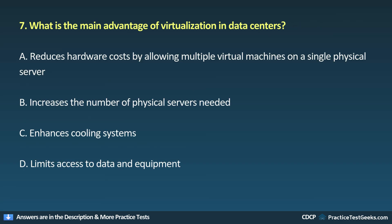Question 7. What is the main advantage of virtualization in data centers? A. Reduces hardware costs by allowing multiple virtual machines on a single physical server. B. Increases the number of physical servers needed. C. Enhances cooling systems. D. Limits access to data and equipment.